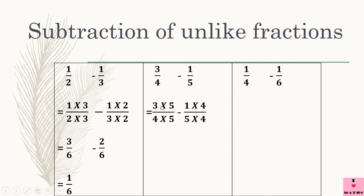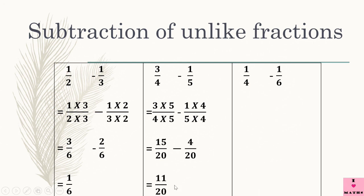3 upon 4: 3 multiplied by 5 upon 4 multiplied by 5, minus 1 upon 5: 1 multiplied by 4 and 5 multiplied by 4. Next step: 3 fives are 15 and 4 fives are 20, minus 1 four is 4 and 5 fours are 20. Now again we have got 2 like fractions, and we know how easy it is to subtract like fractions — we just subtract the numerators. 15 minus 4 is 11, so the answer is 11 upon 20.